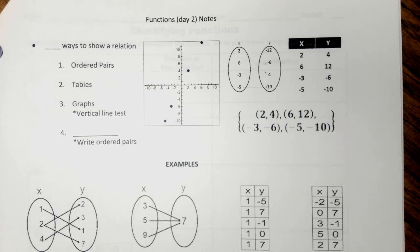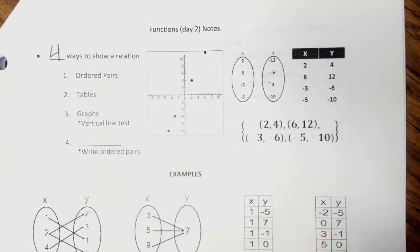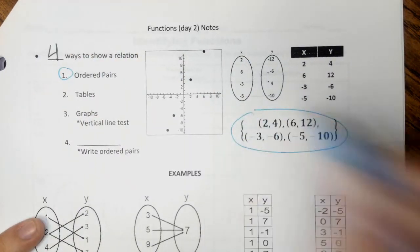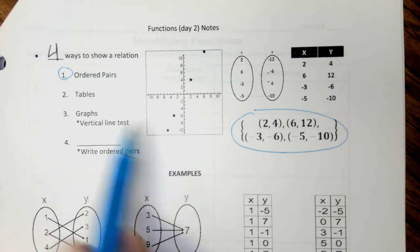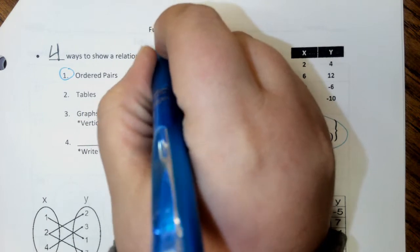In yesterday's video we started talking about functions and we found out how to tell if a relation or a set of ordered pairs was a function. Today we're going to find out that there are actually four different ways that you can write or show a relation. The first way is looking at ordered pairs, like we saw yesterday. The question we ask ourselves with ordered pairs is: are the x's different?